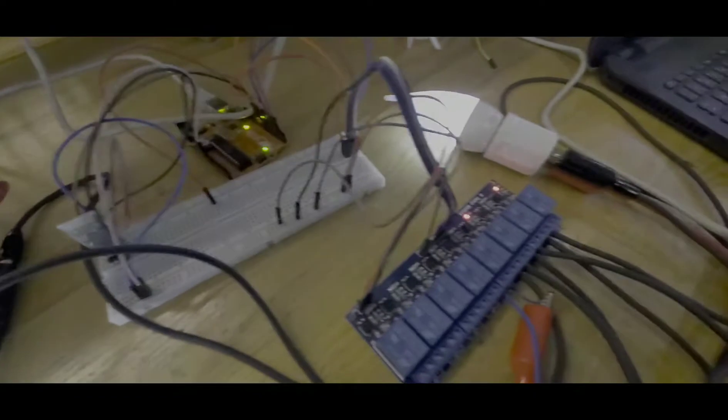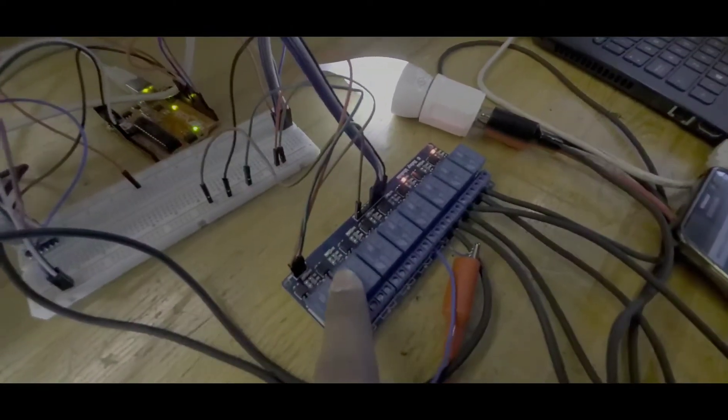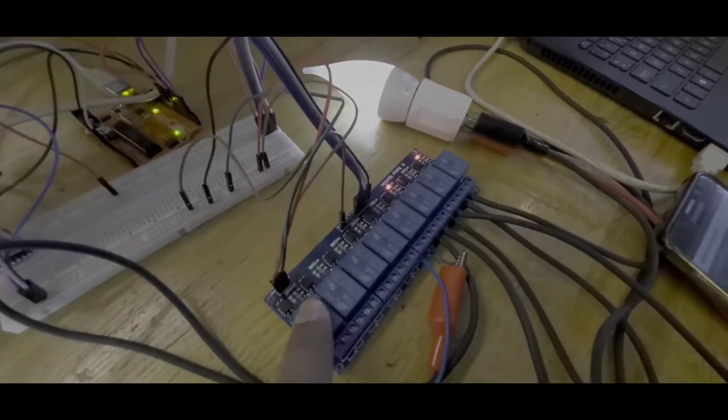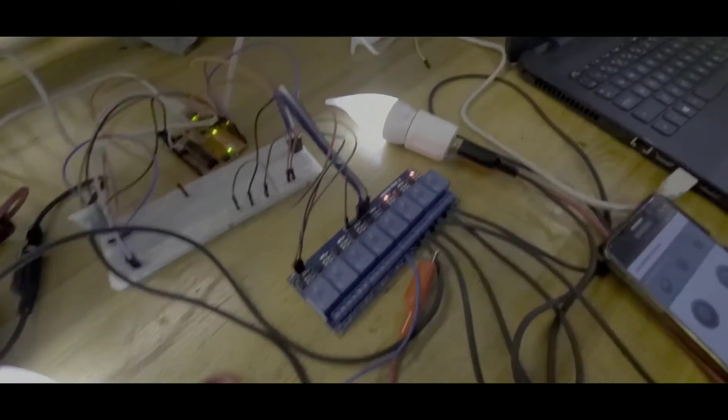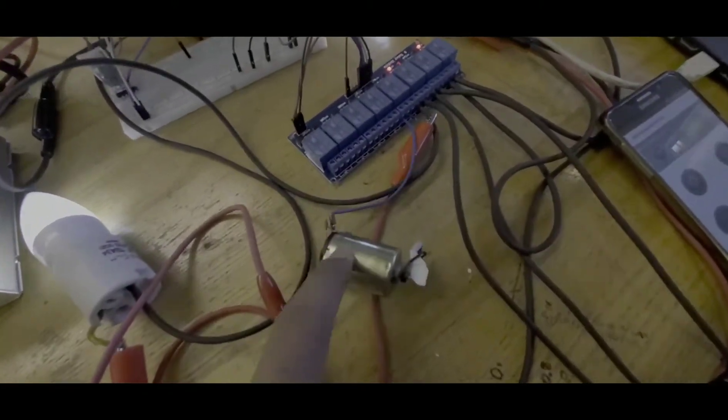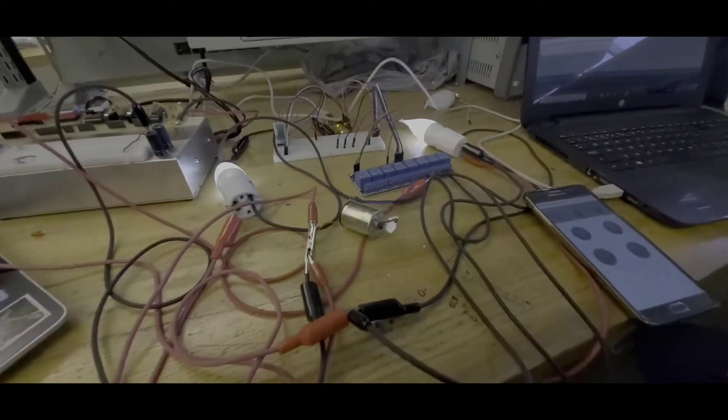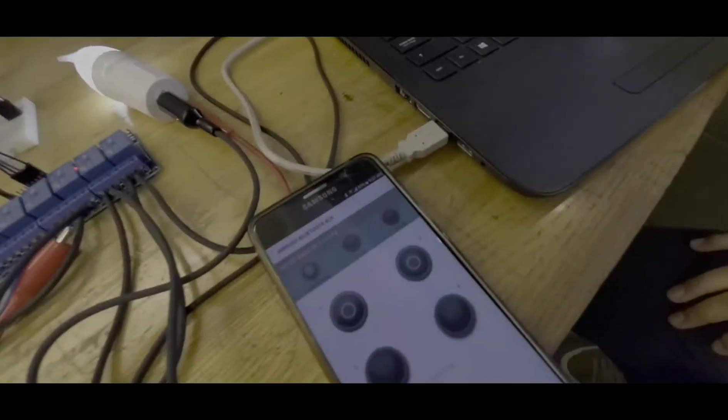Here we go with the 8-channel relay module. The relay is used for controlling high power using low power, so we can even control the bulbs. This is the motor we are using as a fan right now as an example.